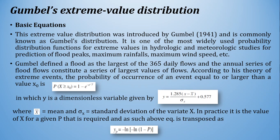Gumbel's extreme value distribution was introduced by Gumbel in 1941 and is one of the most widely used probability distribution functions for extreme values in hydrologic and meteorologic studies, including prediction of flood peaks, maximum rainfalls, and maximum wind speeds.